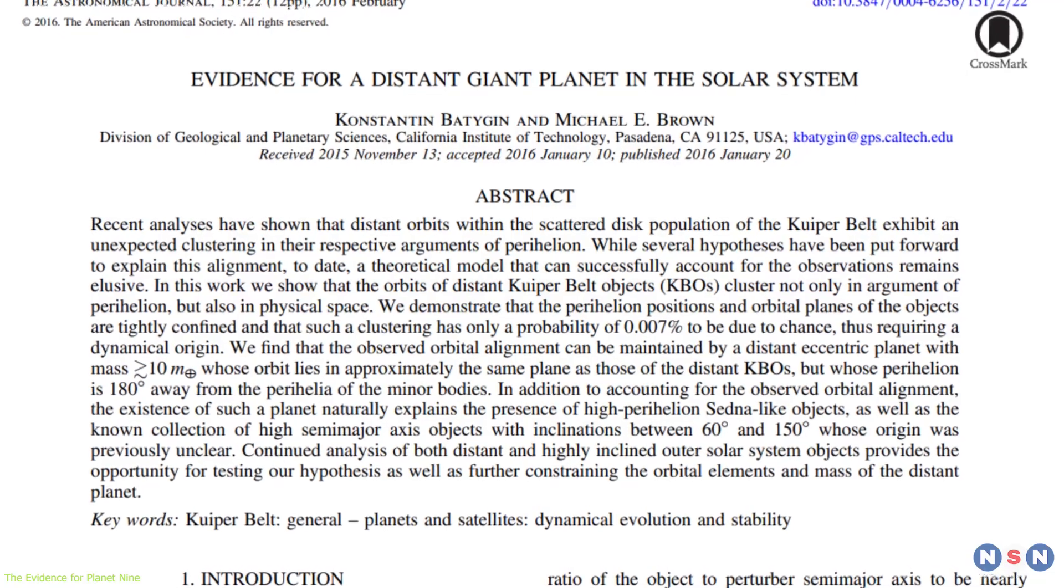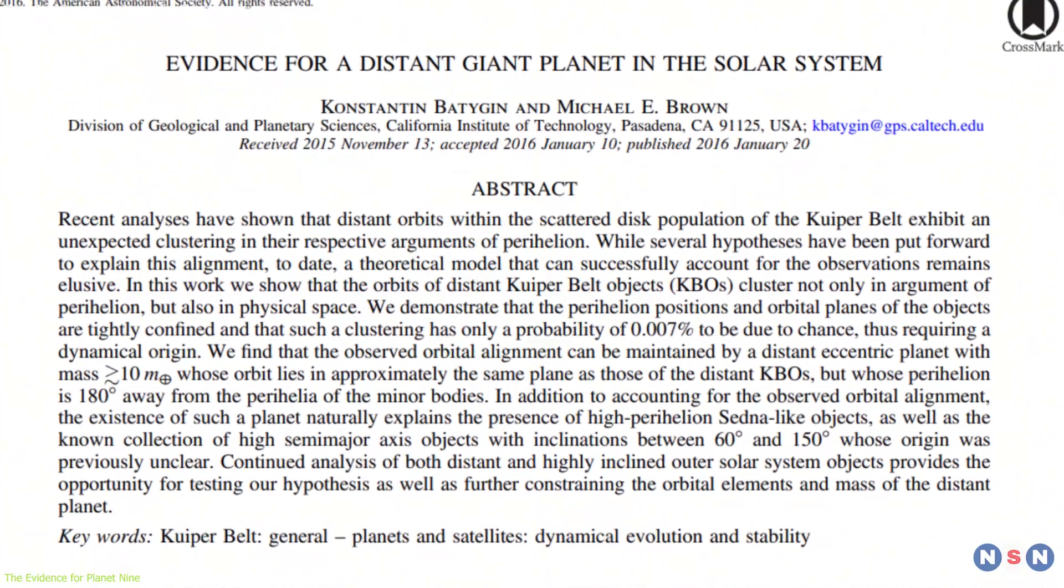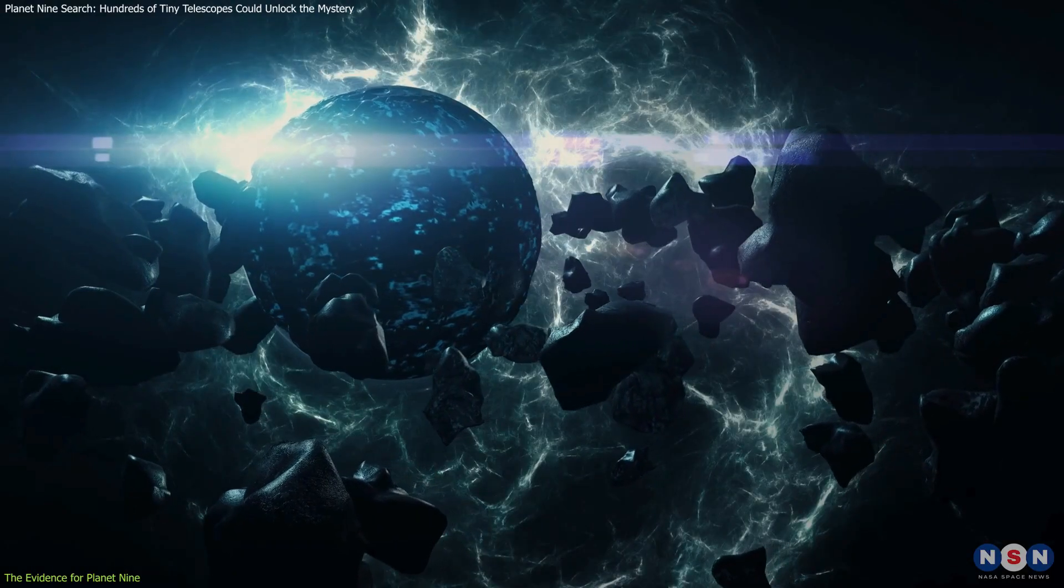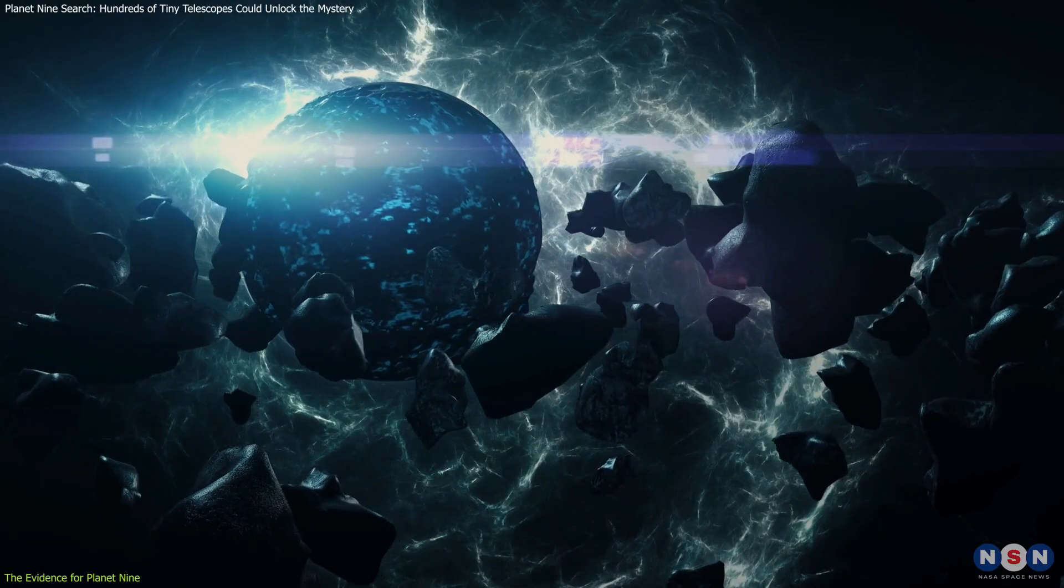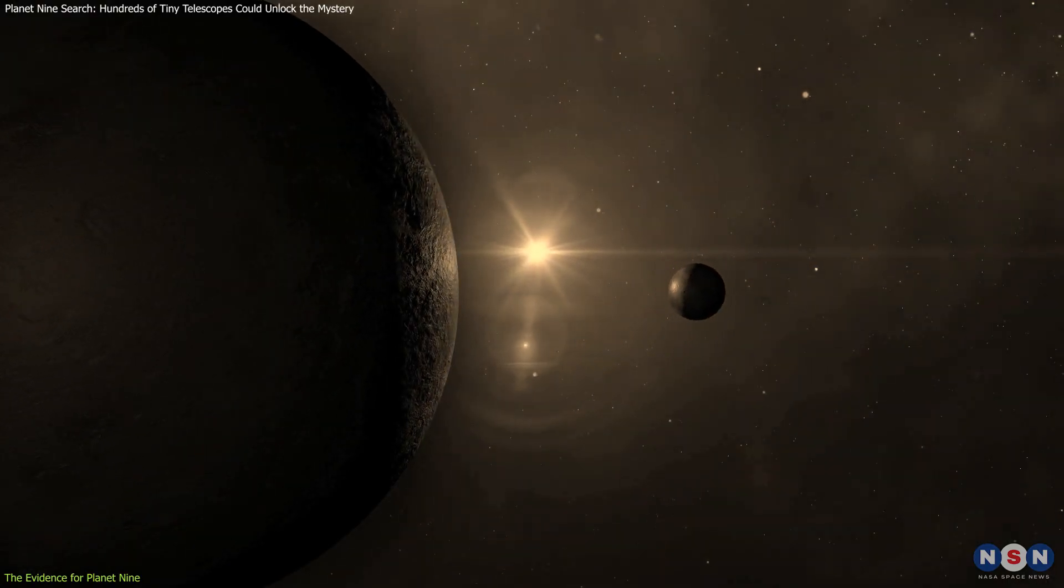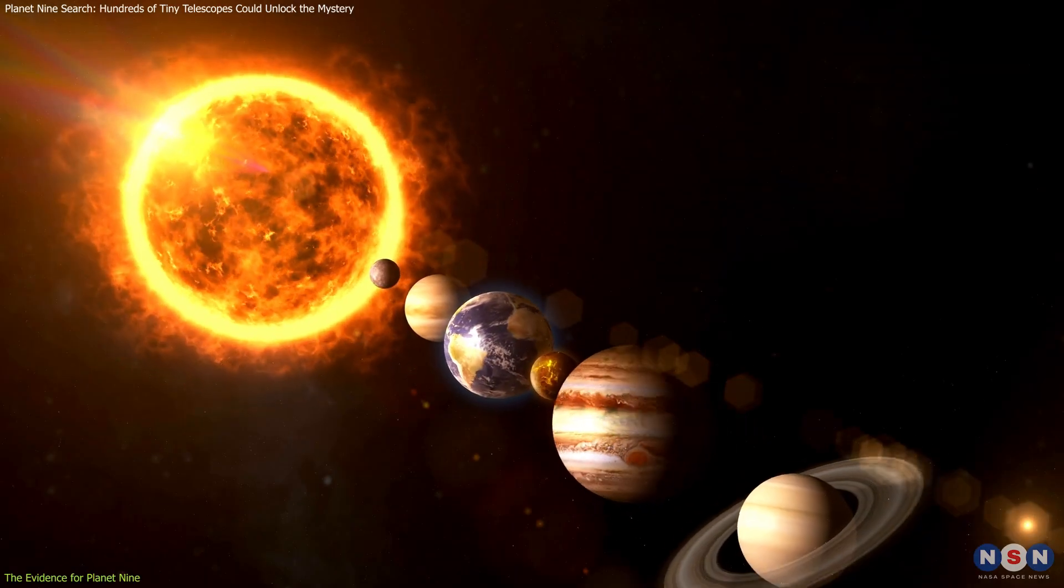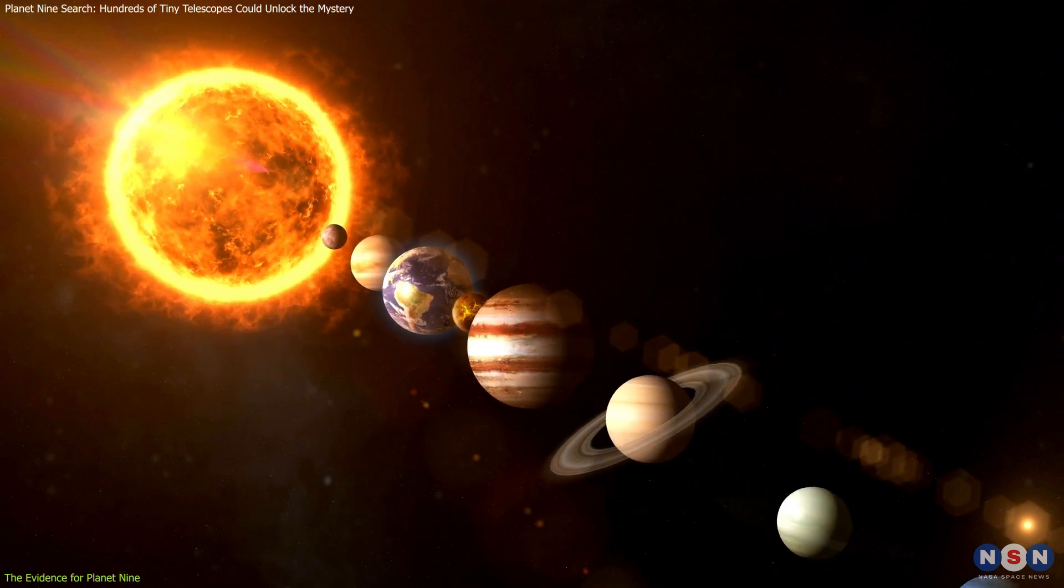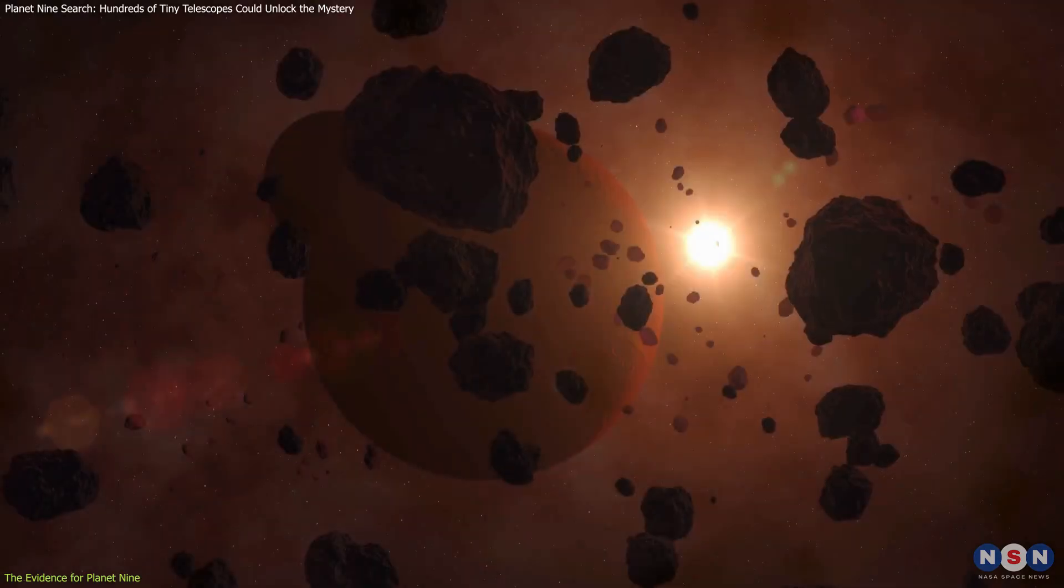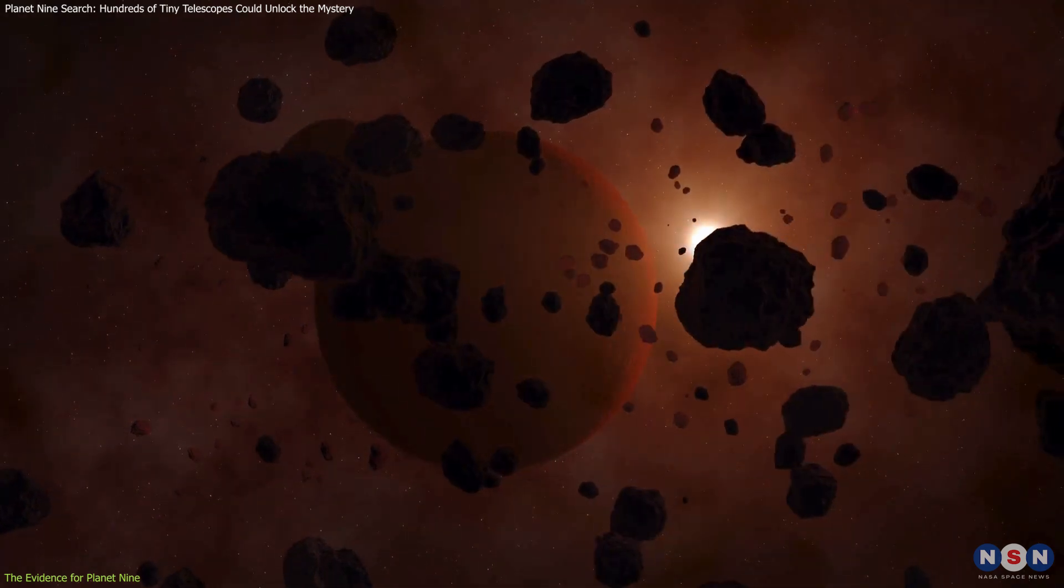In 2016, Constantine Bedigan and Michael E. Brown presented a groundbreaking study that mathematically supported this hypothesis. They proposed that the hypothetical Planet 9 could be about 10 times the mass of Earth, orbiting the Sun at an extreme distance of 400 to 800 astronomical units. For context, Neptune, the outermost known planet, orbits at a distance of just 30 astronomical units. The immense distance of Planet 9 makes it incredibly faint and difficult to detect directly.